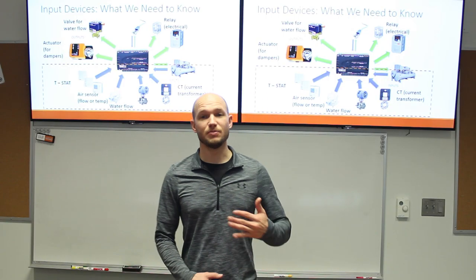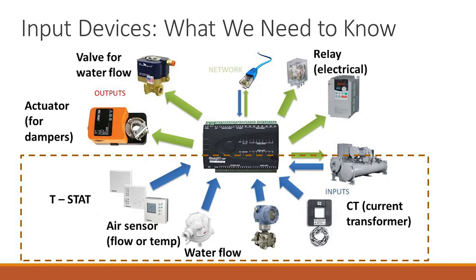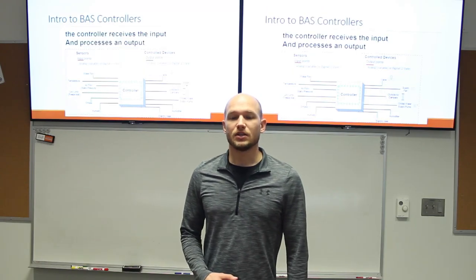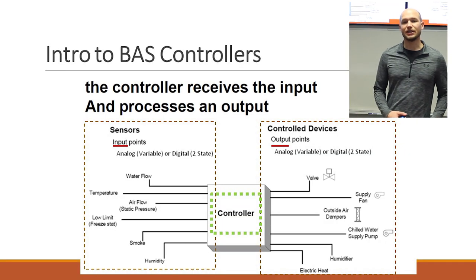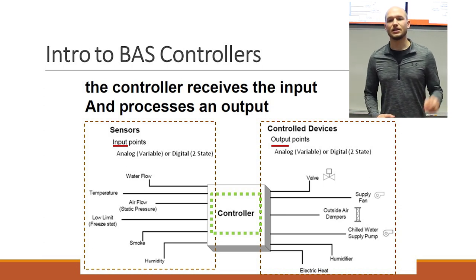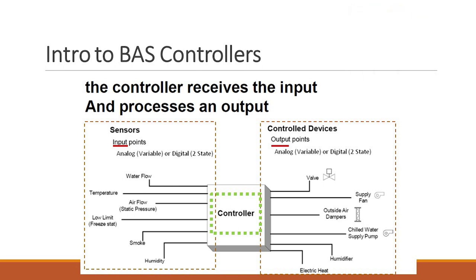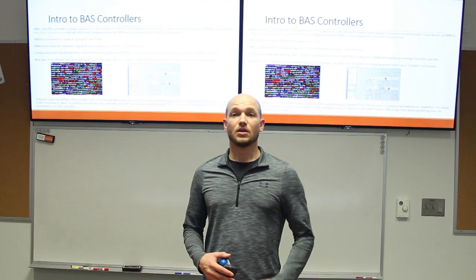Input devices — what does the controller need to know? This information comes from thermostats, air sensors, water flow, current transformers, and inputs from different machines. In this picture it's a chiller. The controller receives the inputs — you can see the input points in this box — and then it outputs. That output can be a valve, a supply fan, or a damper.